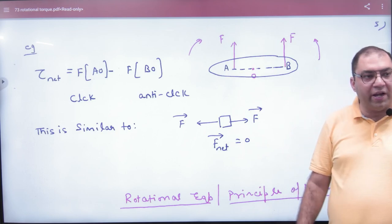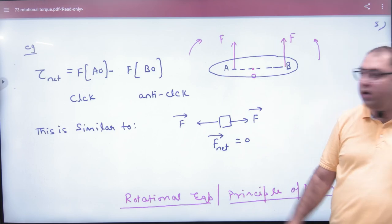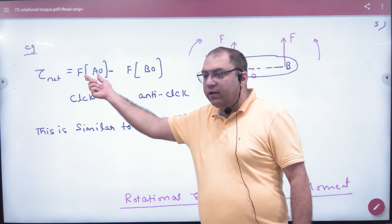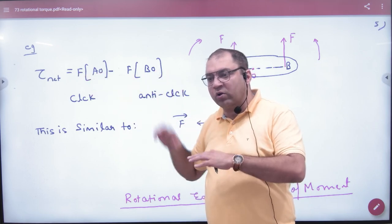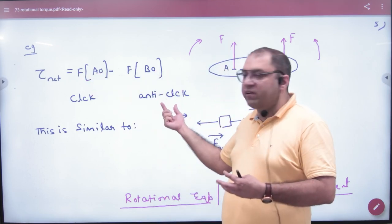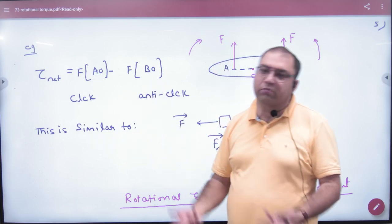So clockwise and anti-clockwise - whichever torque will be bigger, whatever product will be bigger, that's bigger and this is small. So small torque will be minus, and if it's bigger, then clockwise will be minus.